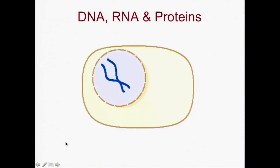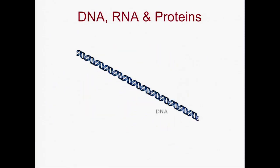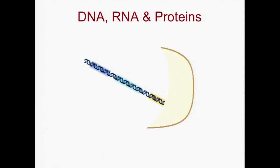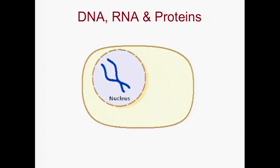The information a cell needs to live, grow, and reproduce is contained in the cell's DNA. The DNA is divided into units of information called genes. In eukaryotic cells, the DNA is contained in the cell's nucleus, whereas proteins are made in the cell's cytoplasm.